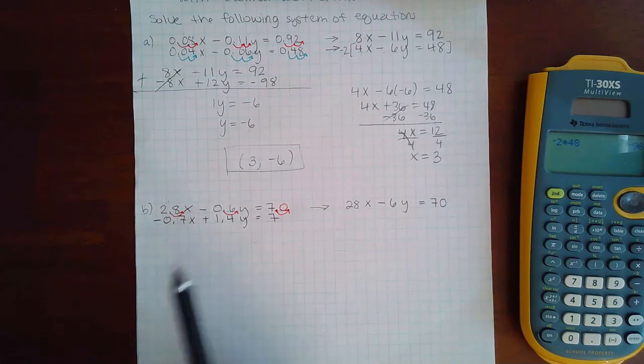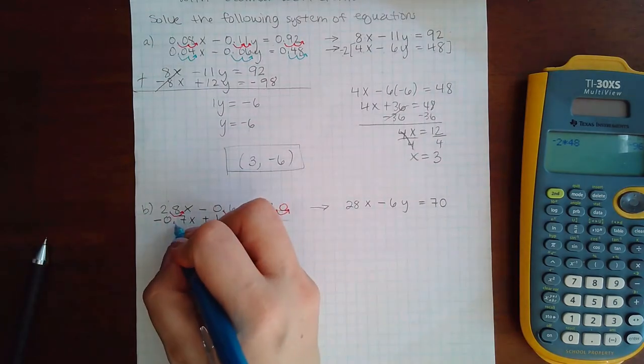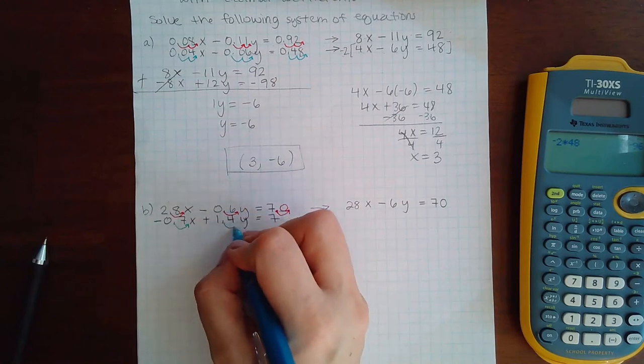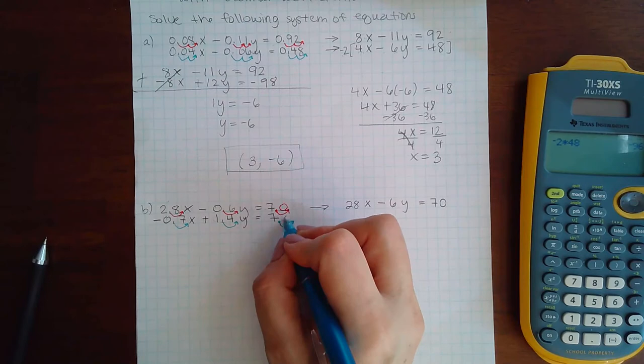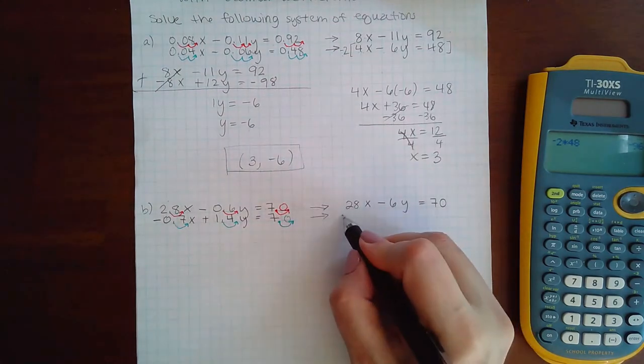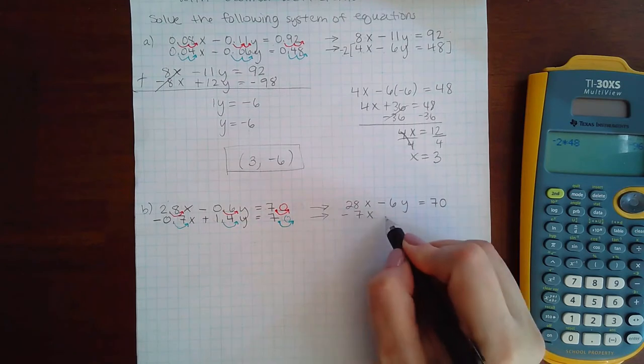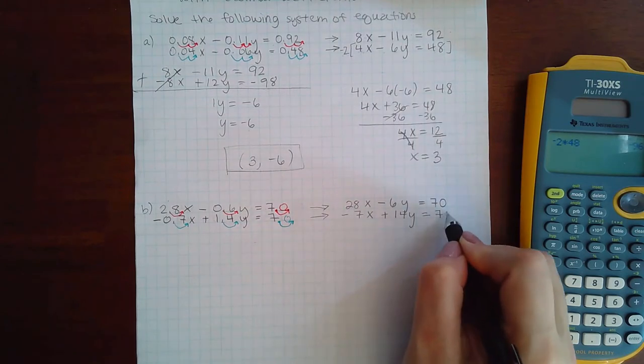Similarly for the bottom, I've got one decimal place here, one decimal place here, none here, but I have to go with the most decimal places which was one. So move this guy over one, move that one over one, move the invisible decimal over one. So then this equation becomes negative 7x plus 14y equal to 70.